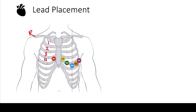The next lead you place isn't actually V3 — it's V4. V4 is placed in the fifth intercostal space in the left mid-clavicular line. From V2, you find the next intercostal space, go to the left mid-clavicular line, and place V4 there. From here, all the other leads are easy: V3 is equally between V2 and V4, and V5 and V6 are just lateral to V4.